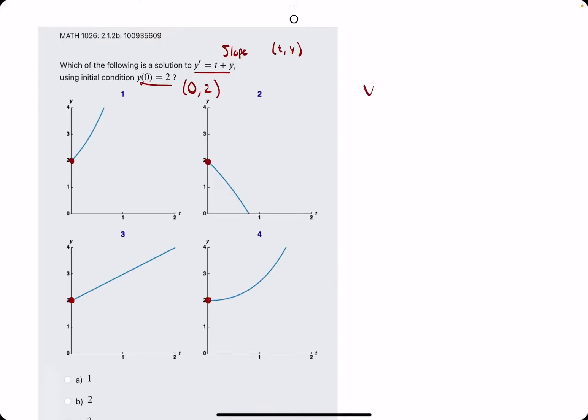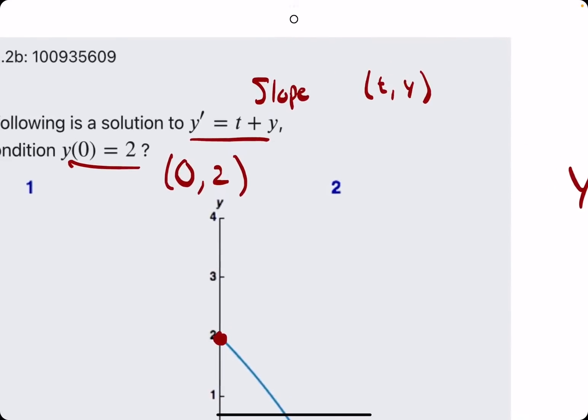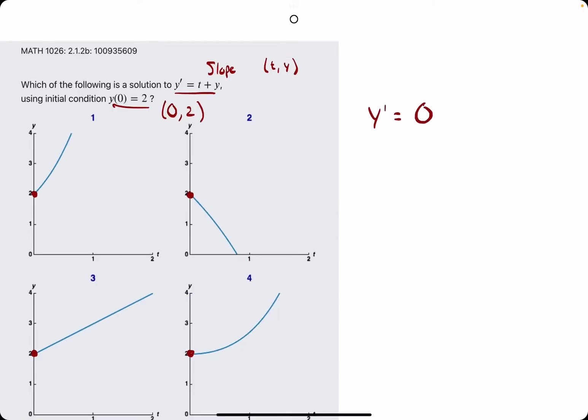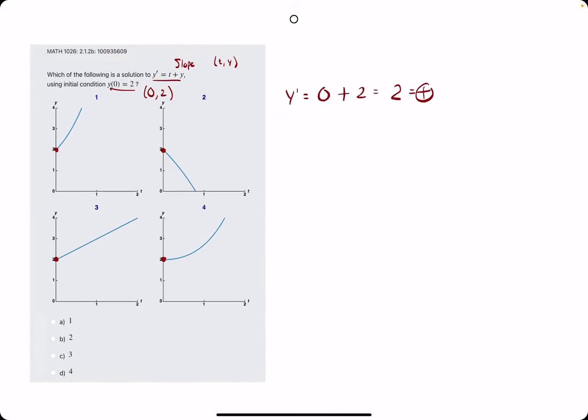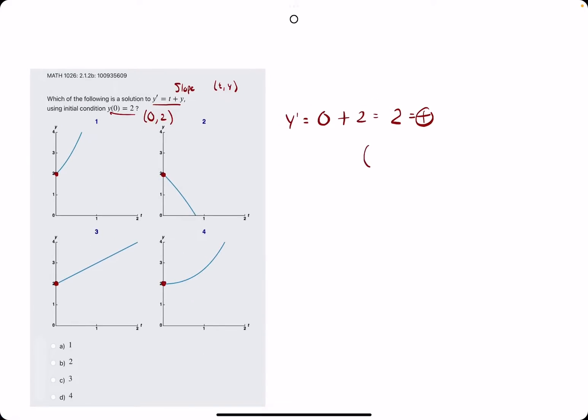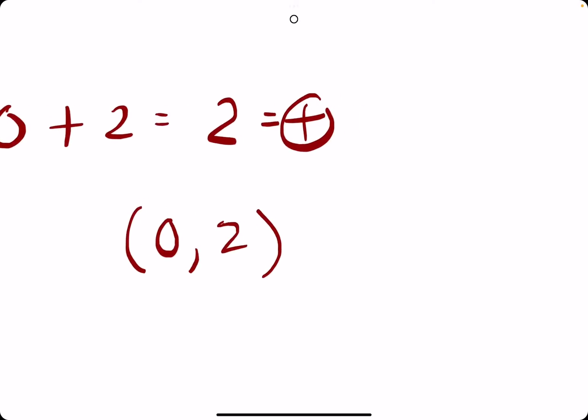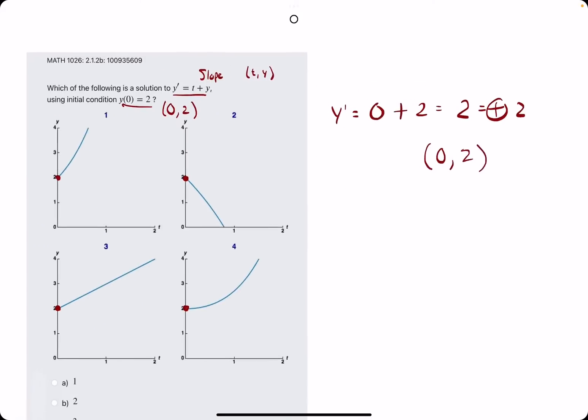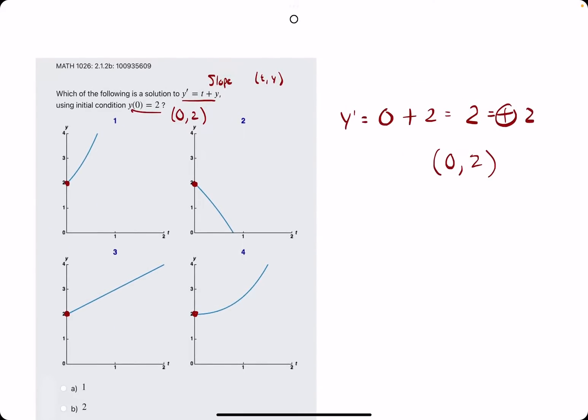However, let's plug in (0, 2) to y prime. So if we plug in 0 for t and 2 for y, that should more importantly tell us the slope at the initial condition. So if we know that at (0, 2), the y' value is positive 2, we should have a positive slope at the start.